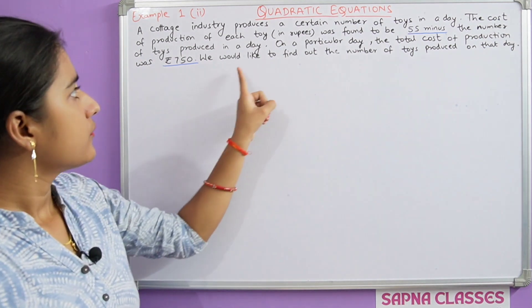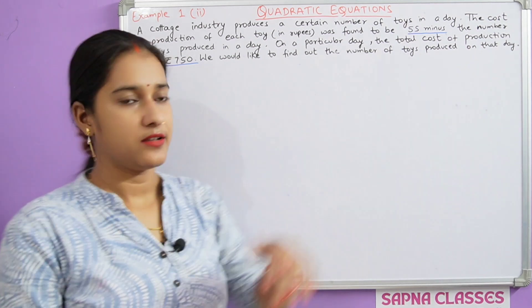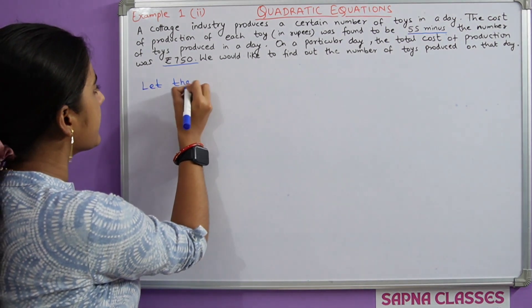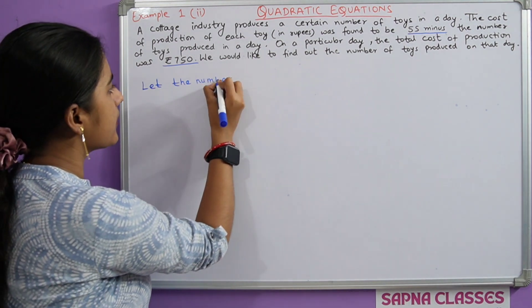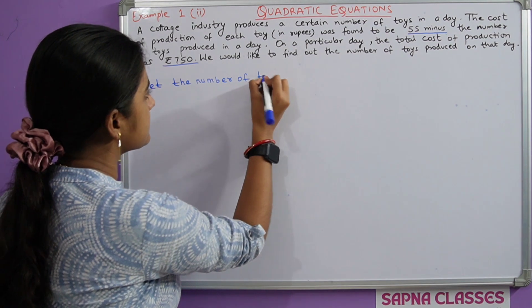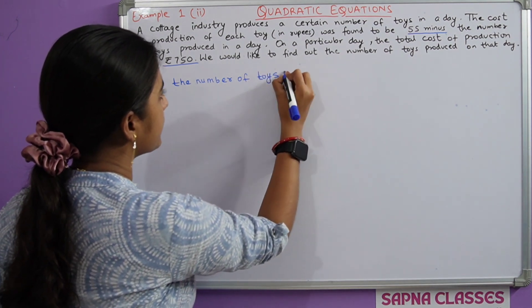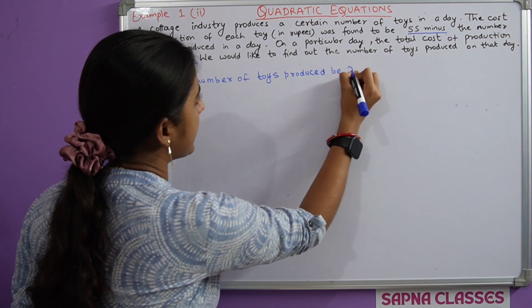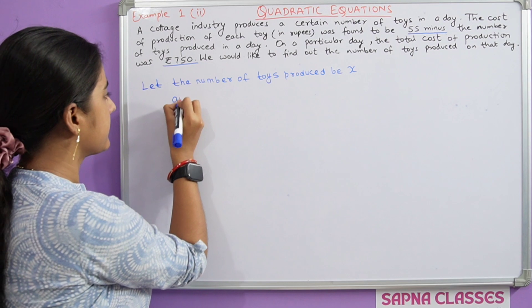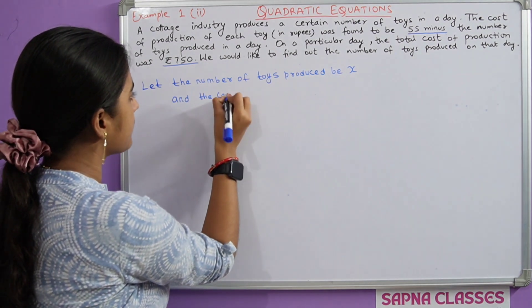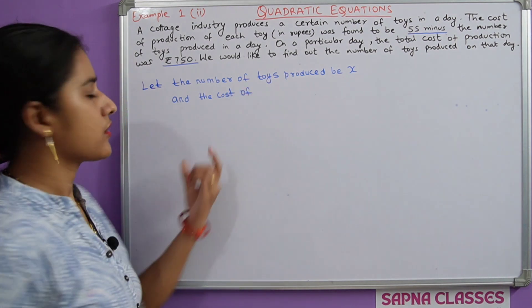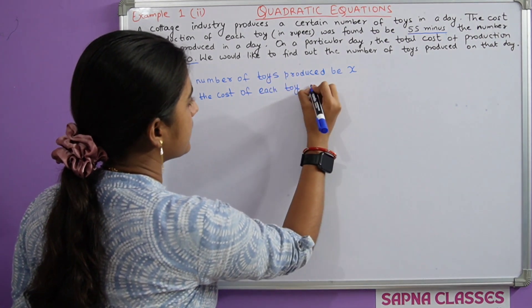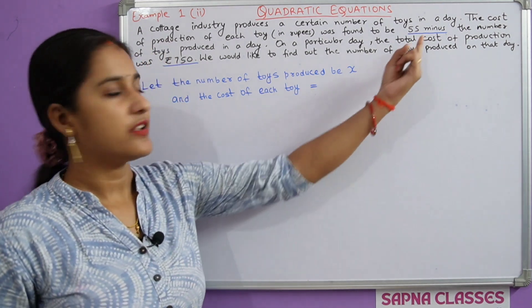What do we need to find? The number of toys produced on that day. So let the number of toys produced be x. And the cost of each toy equal to 55 minus x.